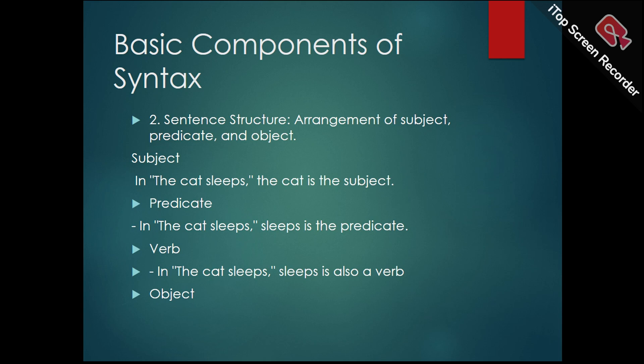The object receives the action of the verb. It is usually a noun or pronoun and can be direct or indirect. The object answers what or whom after the verb. In English, the most common sentence structure is subject-verb-object (SVO), but variations and more complex structures can be used to convey different nuances and details.